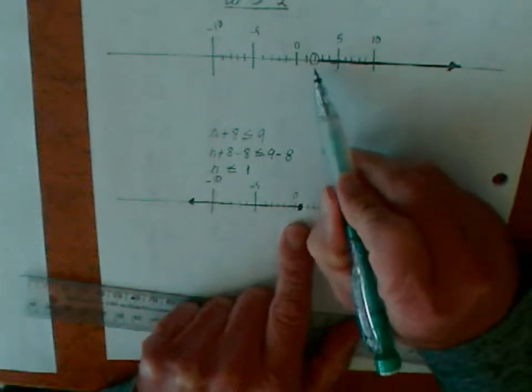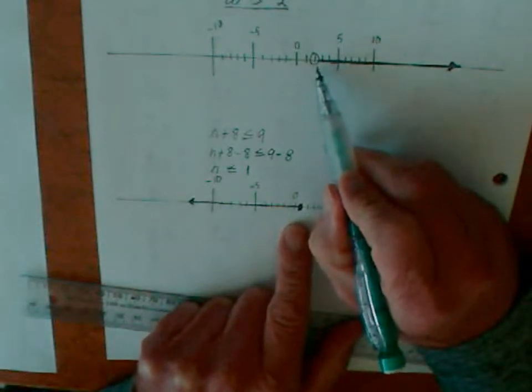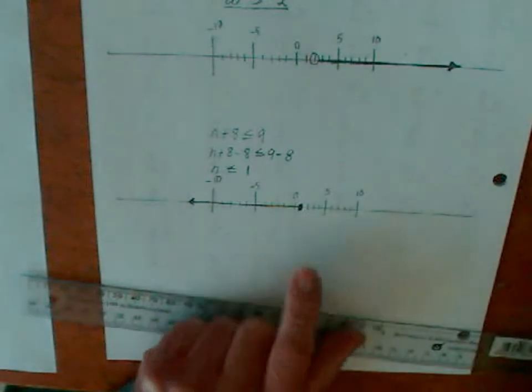Up here, this doesn't include the number 2. So 3, 4, 5, and so on and so forth.